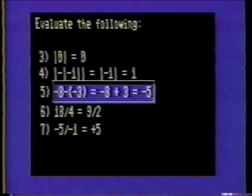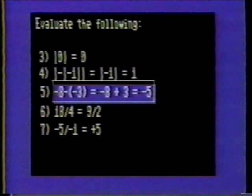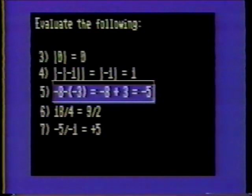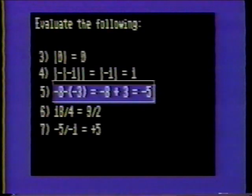Number five: negative 8 minus negative 3. Remember, a minus sign alters the sign of the number it precedes. Thus, minus negative 3 becomes positive 3. The problem now reads negative 8 plus 3. Negative 8 plus 3 is negative 5.